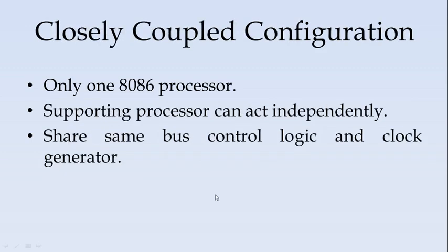In the closely coupled configuration, there is also only one 8086 processor, but the supporting processor is an independent processor — it can act independently, unlike a co-processor. However, it still shares the same bus control logic and clock generator with the 8086.